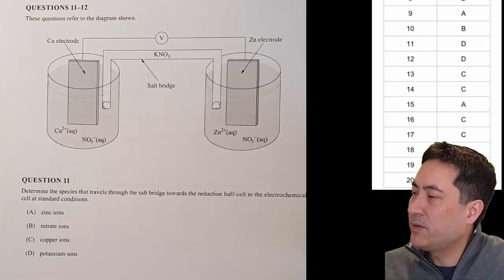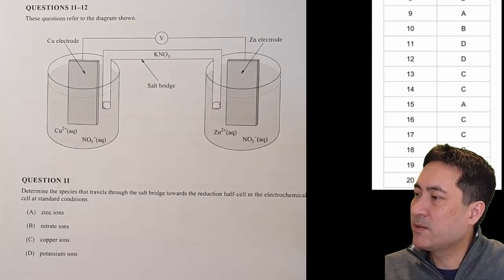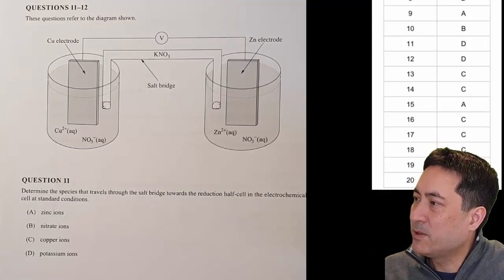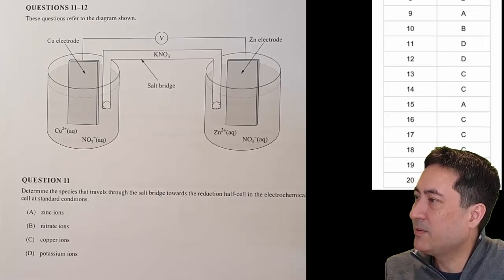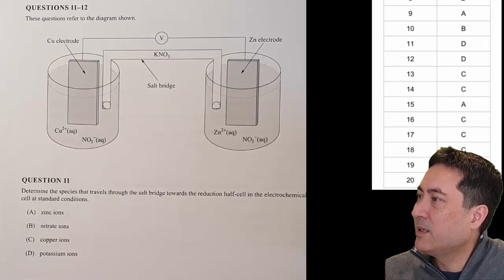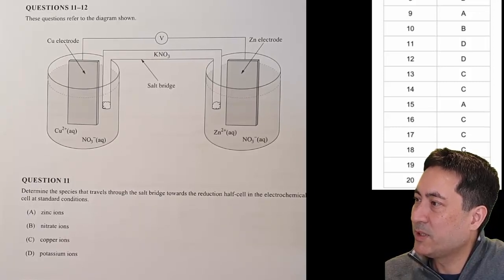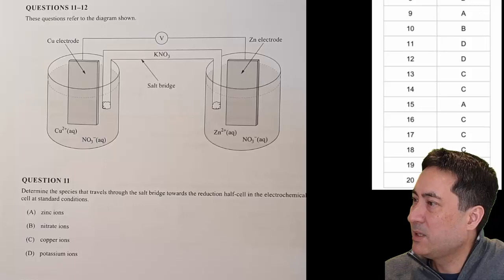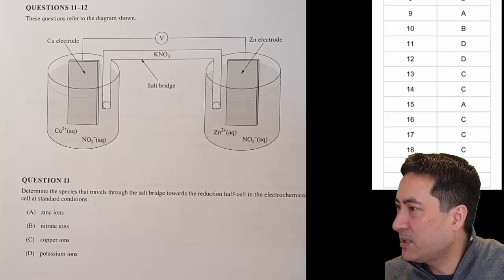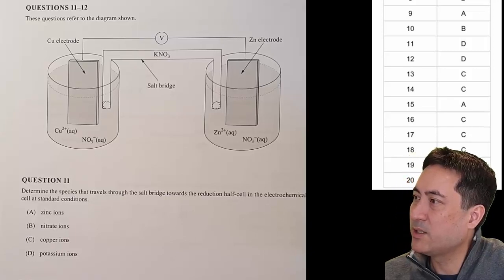Questions 11 and 12 are related. There's a lot of work — they have left certain things out and the convention has gone in the other direction. Determine the species that travels through the salt bridge towards the reaction half-cell in the electrochemical cell under standard conditions.